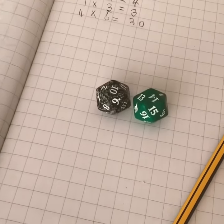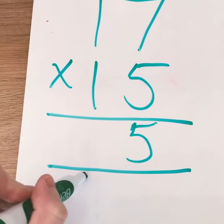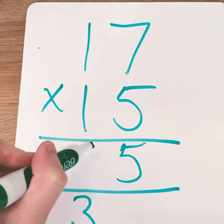We've got some bigger dice now. We're going to have a go at some long multiplication. Five times seven is thirty-five, carry the three. Five times one is five, add the three is eight.